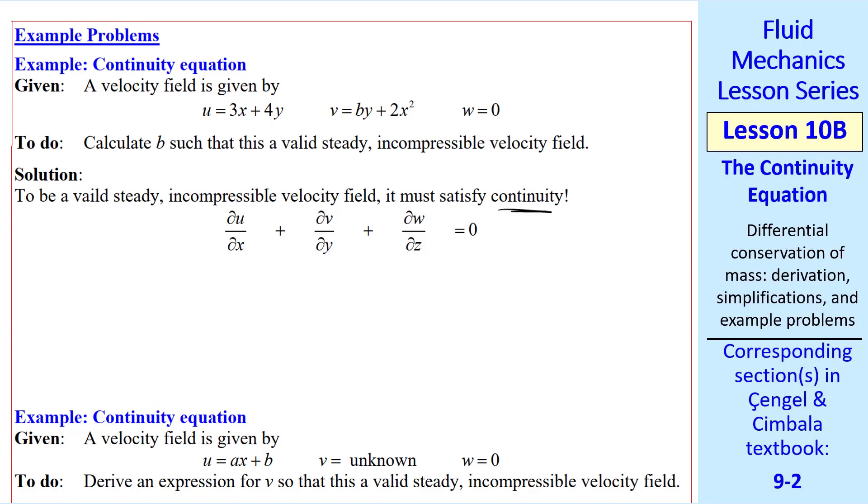These are partial derivatives, so you have to be careful when you evaluate them. We take del u del x by pretending y and z are constant, so del u del x here is just 3. Similarly, del v del y is just b, and w is 0, so del w del z is 0. So our answer is b equal minus 3.